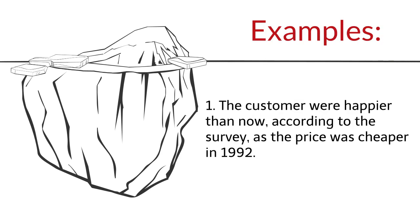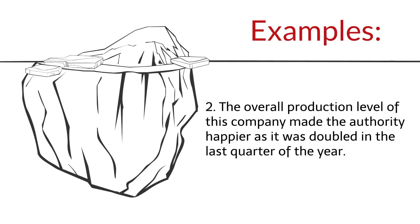Examples. The customers were happier than now, according to the survey, as the price was cheaper in 1992. The overall production level of this company made the authority happier as it was doubled in the last quarter of the year.